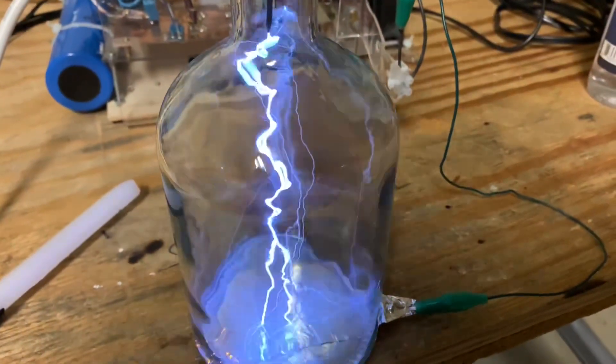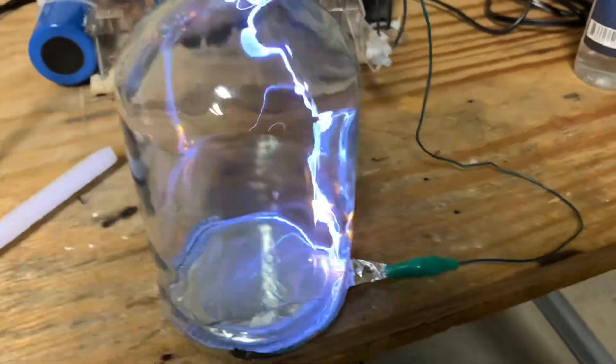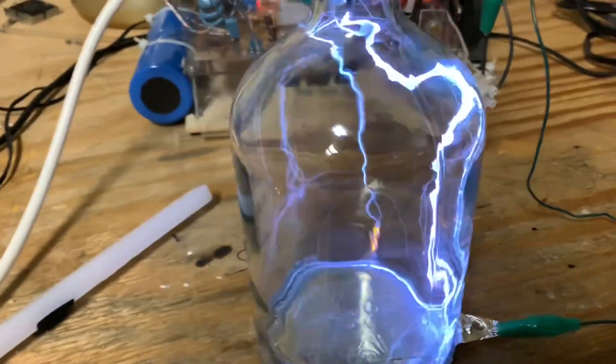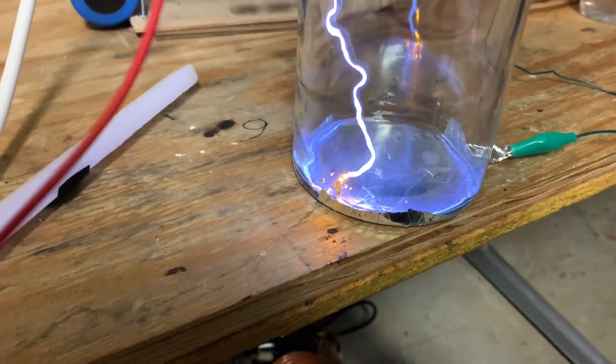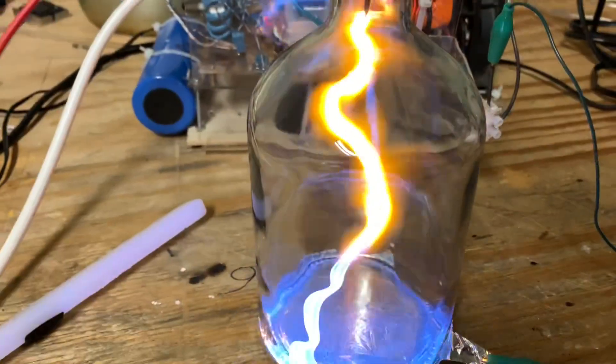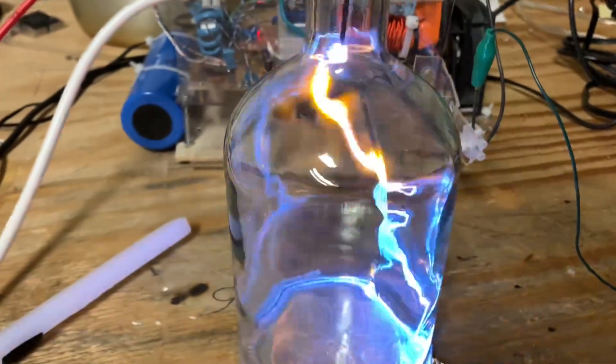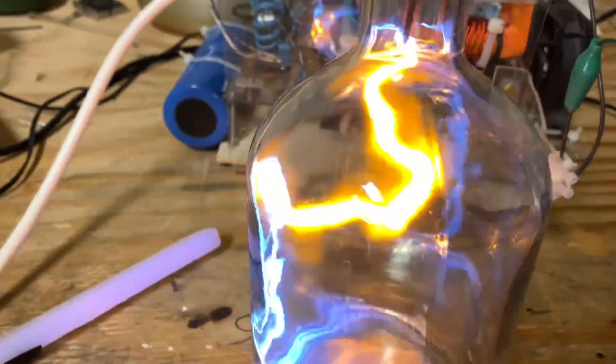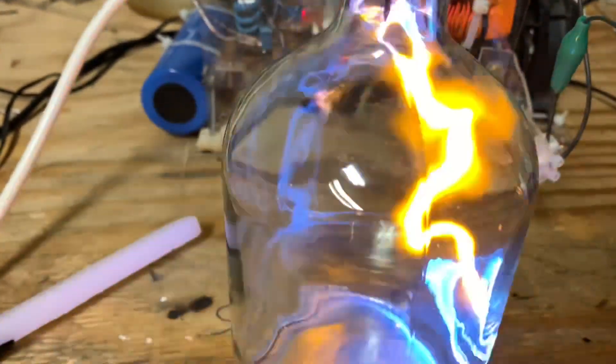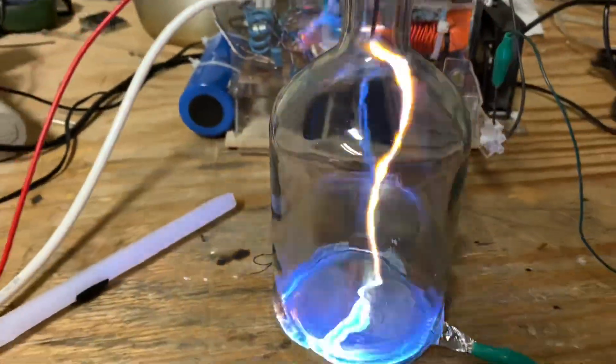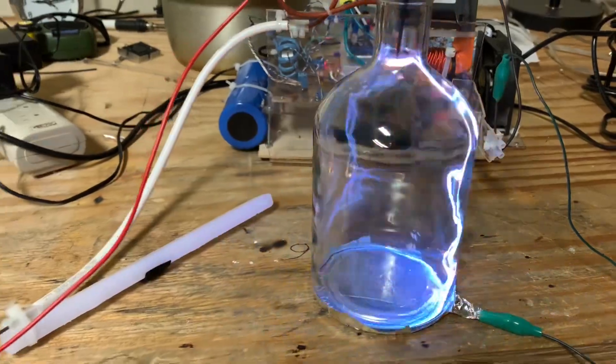Now when I just turn on high voltage to the atmospheric pressure argon gas it's typical argon color. Now if I leave it long enough the heat of the plasma arcs evaporates the sodium and makes these bright yellow brilliant yellow arcs. They're amazing to watch and they dance around in the bottle.